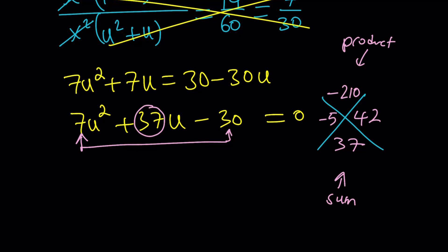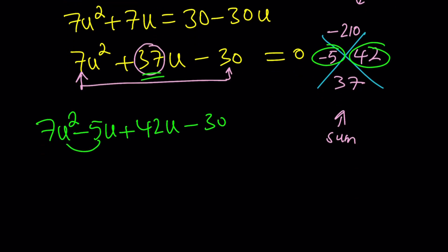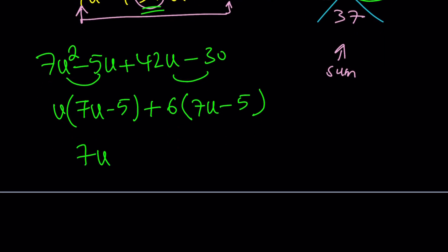How do I use these numbers? These two numbers are special because they're going to break down the 37. So I'm going to write this as 7u squared minus 5u plus 42u minus 30. And I can factor this by grouping. Factor out u, 7u minus 5, and then here you can factor out 6 and 7u minus 5. This allows you to factor by grouping: 7u minus 5 and u plus 6 equals 0. From here we get two solutions. One of them is u equals 5 over 7, and the other one is negative 6.